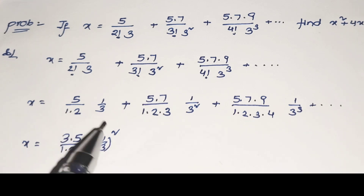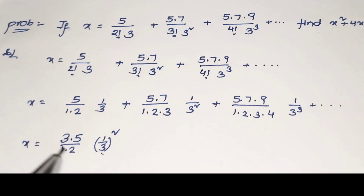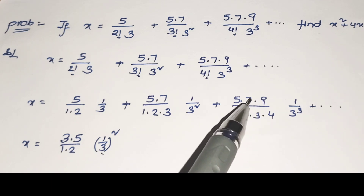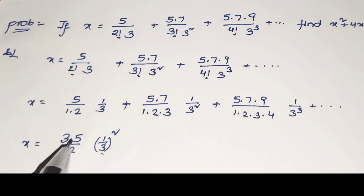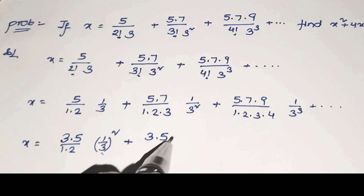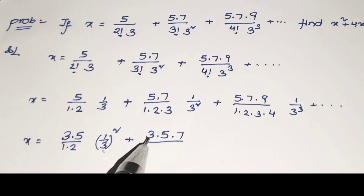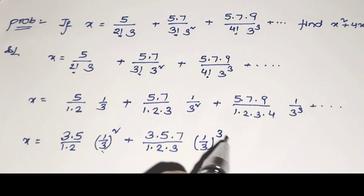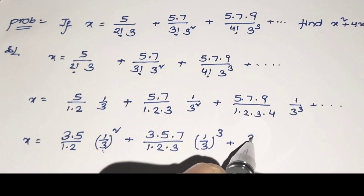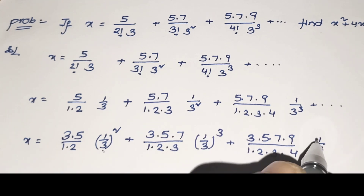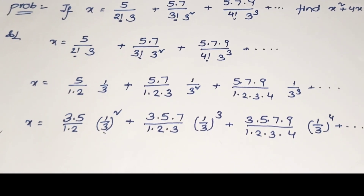Now you get (1/3)² pattern. I am applying 3 in this fraction. Why are we applying the number 3 only? Check the difference here: 9−7=2, 7−5=2, 5−3=2. We have to take a number such that all the terms have the same difference. So we apply the number 3. Here 3, 5, difference 2; 5, 7, difference 2 — like that. By checking this difference, we apply the number 3, so (1/3)² becomes (1/3)³, and then the next value 3×5×7×9 / (1×2×3×4) becomes (1/3)⁴.